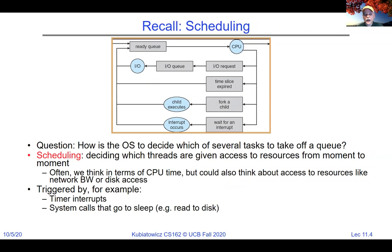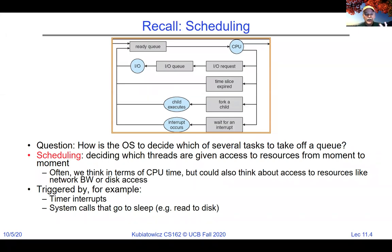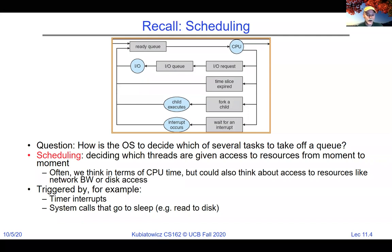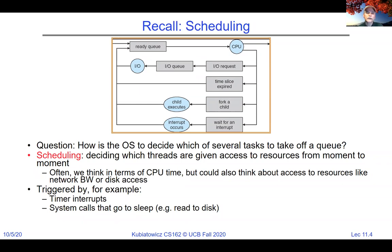How does scheduling get triggered? It can be triggered by timer interrupts, by other IO interrupts, or whenever a thread voluntarily goes to sleep — like when it's trying to do IO and gets stuck in the top half of a device driver. The scheduler runs under all circumstances where it's time to take the current thread, put it to sleep, and pick another one.